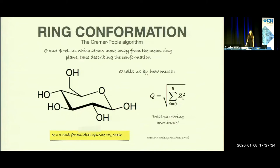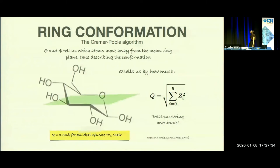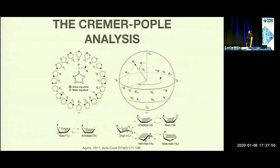In order to do this ring puckering and conformation check, Privateer uses the Cremer-Pople algorithm, which tells us about which atoms and how much they move away from the mean ring plane, as you can see here. We can use this to judge whether the conformation and the puckering of a sugar are correct.